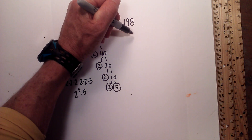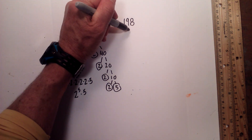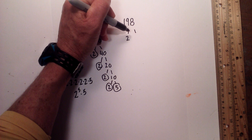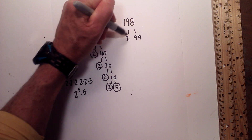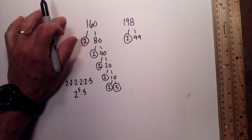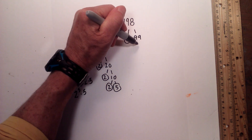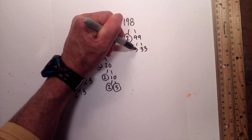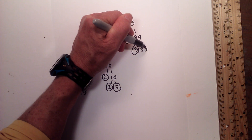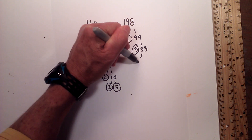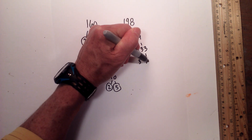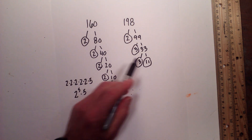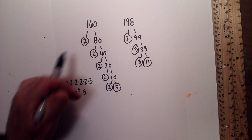Starting with 198: 2 times 99 equals 198 — circle the 2 because it is prime. Next, 3 times 33 equals 99 — circle the 3 because it is prime. Then 3 times 11 equals 33 — circle both of them. I'm finished because I'm now down to just prime numbers.